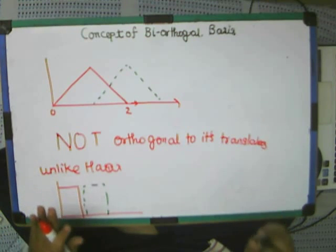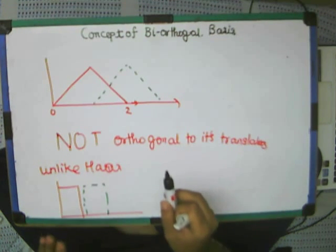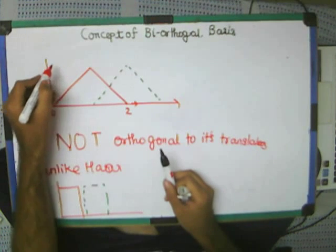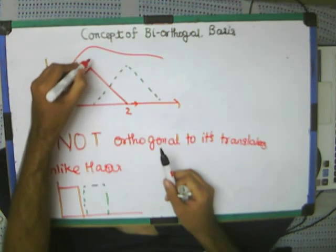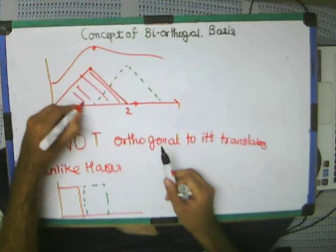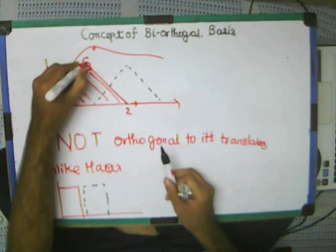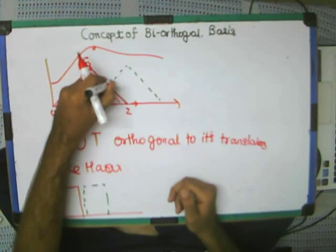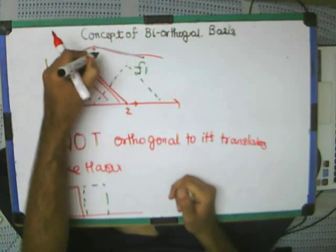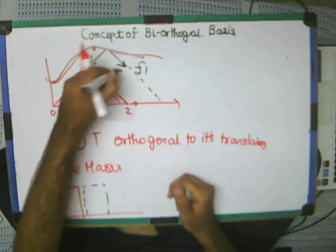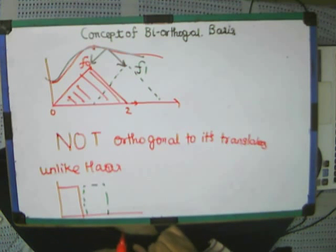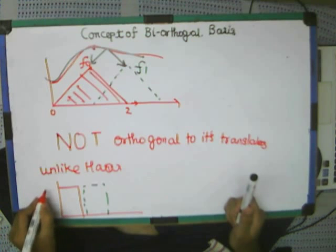Bi-orthogonal is a simple technique to find out the component. For example, there is this function — to find out the component, let this overall area be x0 and this area under this be f1. So just find out the component of this complete function over this basis and over this basis separately. In the Haar case, we can directly find out.